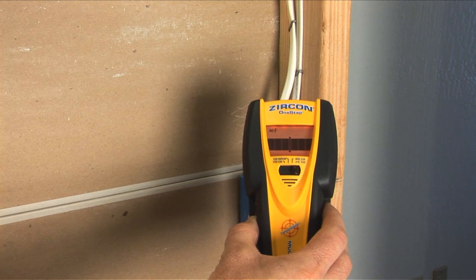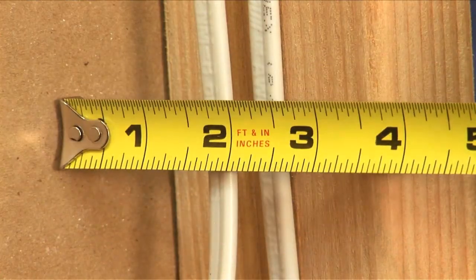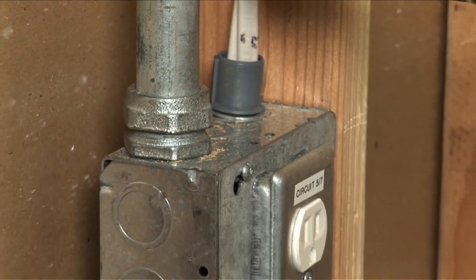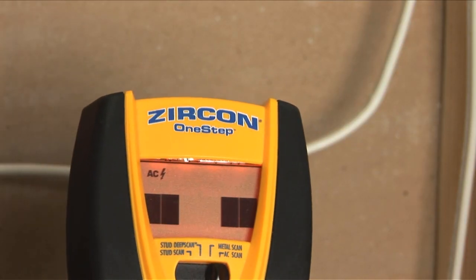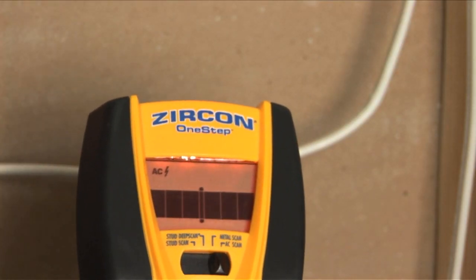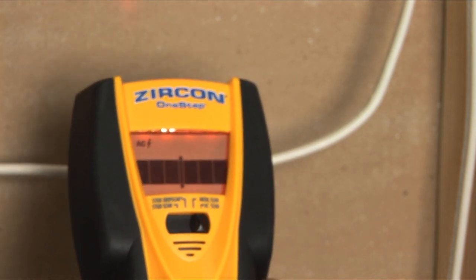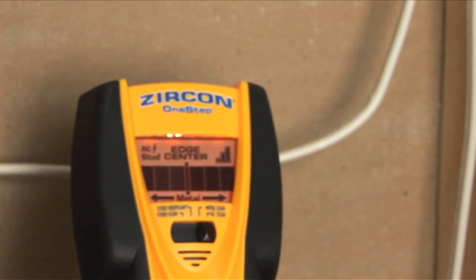The Multiscanner i520 will help you locate wires up to two inches deep behind the wall as long as they aren't shielded by metal. The sensitivity of the tool depends on how closely it calibrates to a live AC wire. Here's an example of how you can use interactive calibration to locate a wire.